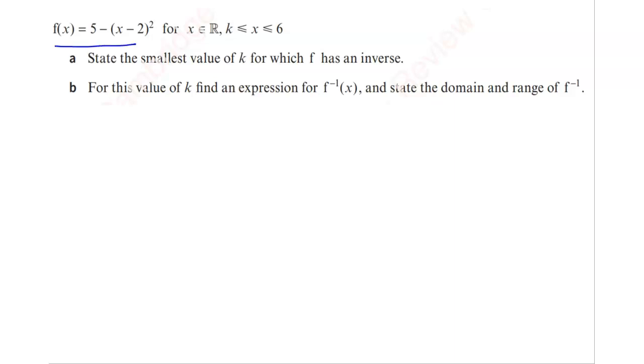Here we consider the function f(x) = 5 - (x - 2)² for x belongs to R and k ≤ x ≤ 6. Now we have to find the smallest value of k for which the function has an inverse, which means it's a 1-to-1 function. If it is 1-to-1 then only the inverse exists. So now we need to find the value of k.